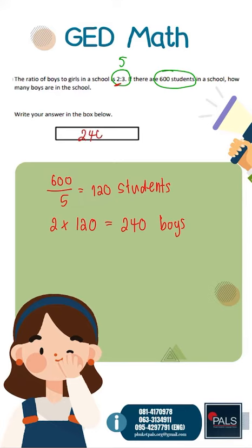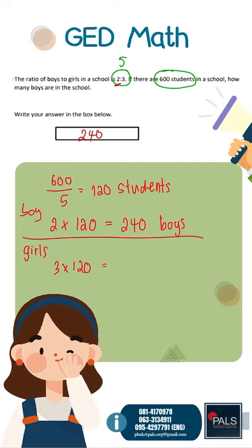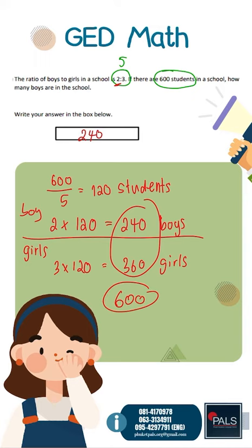So the answer is 240. If we change the question to find how many girls are in the school, the ratio of girls is 3. So 3 times 120 is 360 girls in the school. To recheck: 360 plus 240 equals 600, which is the total. This is the way to verify your answer.